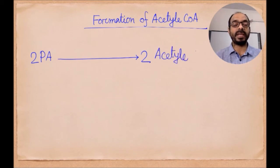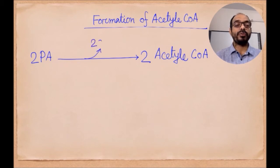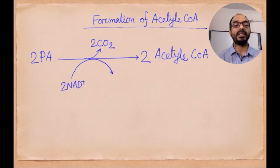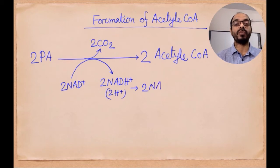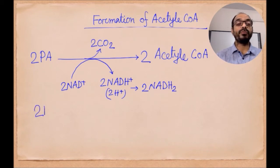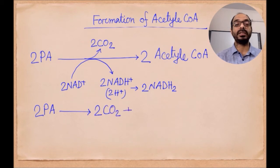The second step of aerobic respiration is the formation of acetyl coenzyme A. In this step, from two molecules of pyruvic acid, it produces two molecules of carbon dioxide, two molecules of acetyl coenzyme A, and two molecules of NADH2. From one molecule of pyruvic acid, it produces one molecule of carbon dioxide, one molecule of acetyl CoA, and one molecule of NADH2.